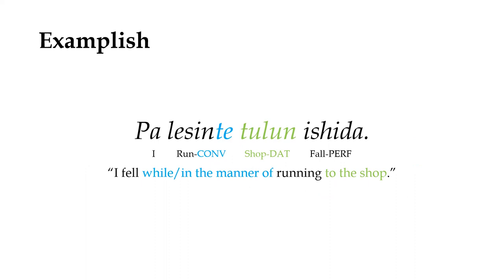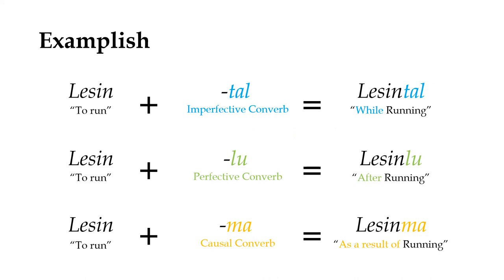If the converb has any arguments or adjuncts, the entire phrase gets interpreted as an adverb modifying the main verb, becoming something like I fell while running to the shop, or I fell in the manner of running to the shop. Not only that, but many languages have multiple types of converbs that each specify a different kind of temporal or causal relationship between the two clauses.